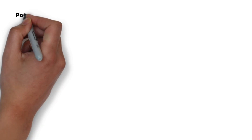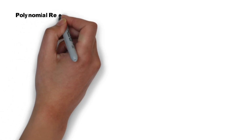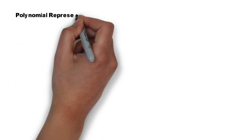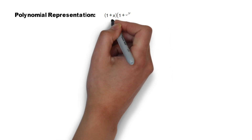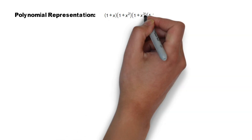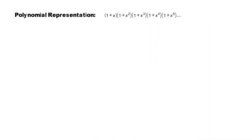Euler stated that we could represent the number of ways to partition an integer as a sum of unique integers with the following polynomial: (1 + x)(1 + x²)(1 + x³), and so forth.